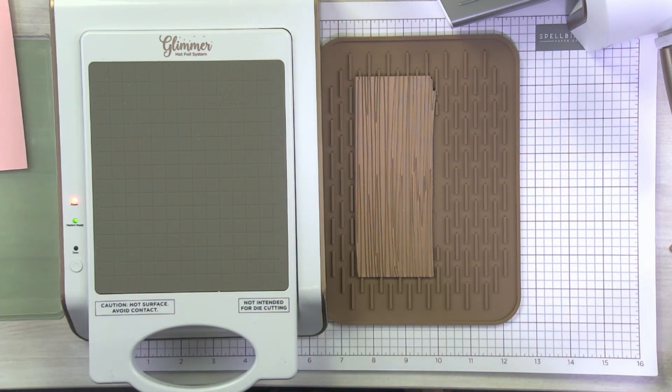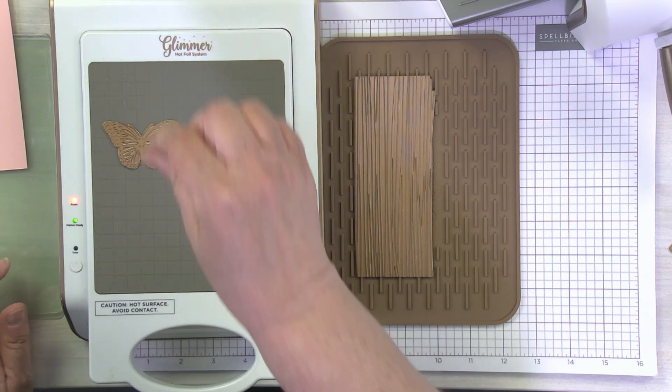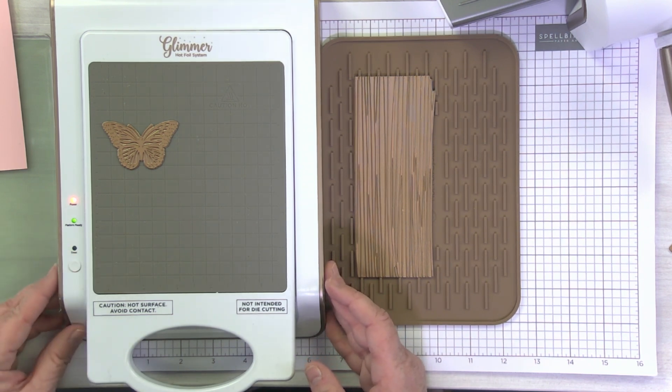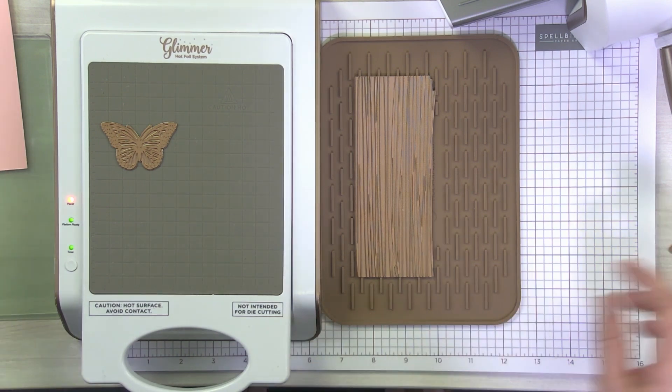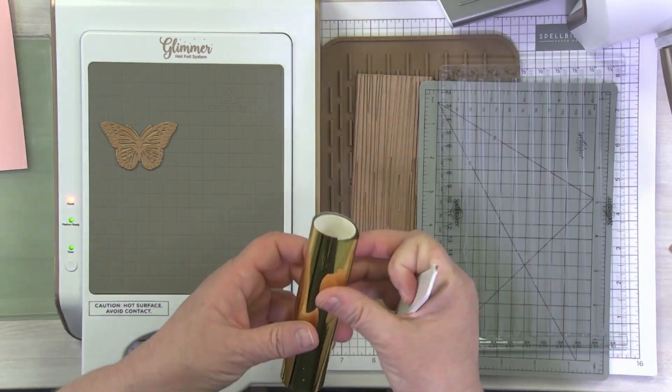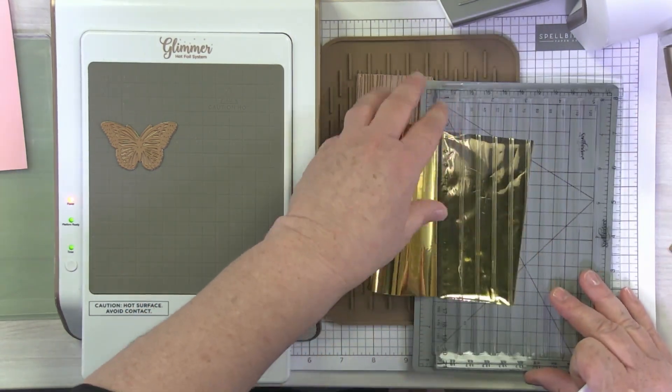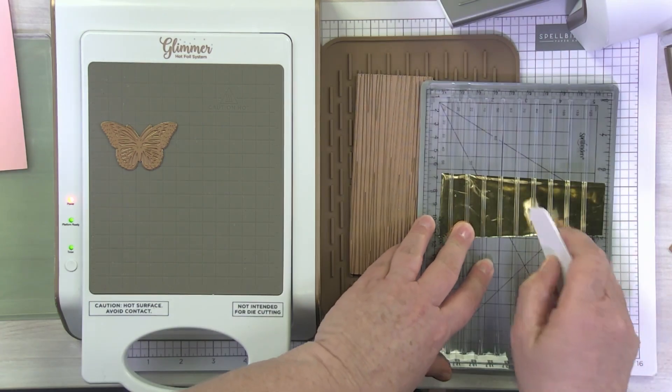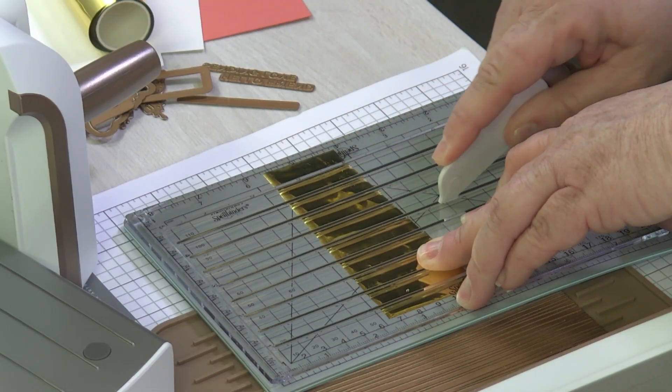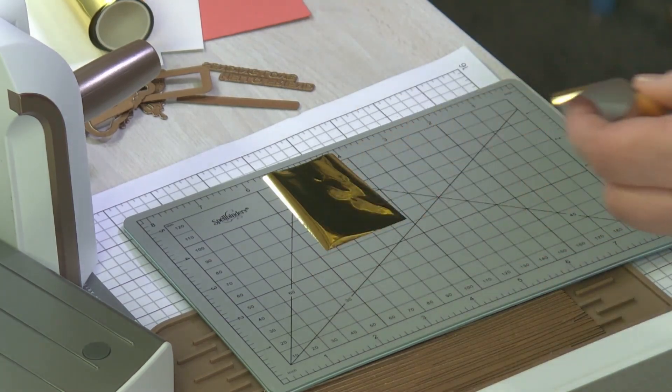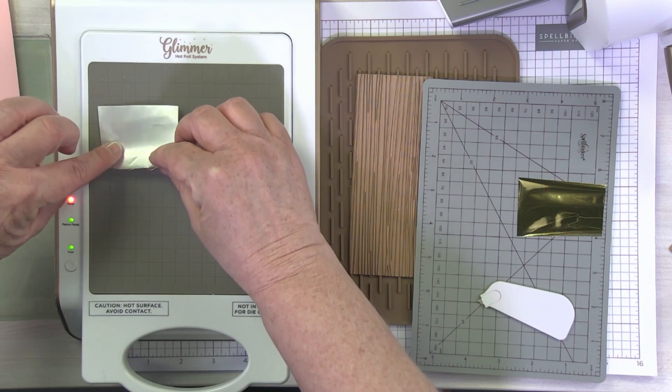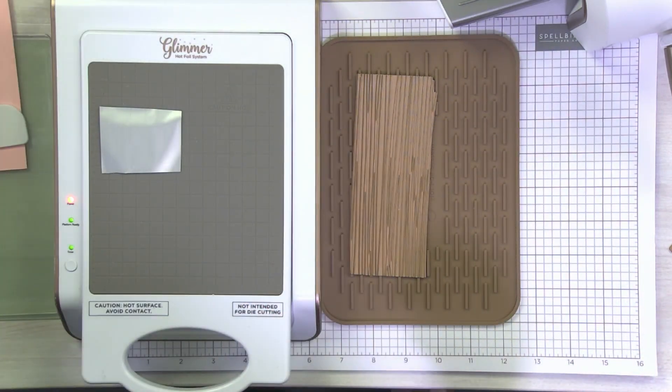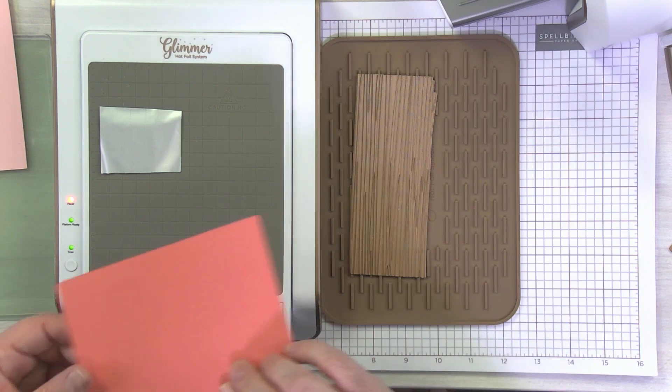Now while this is still heating up, I'm going to go ahead and grab my butterfly. This is one of my glimmering butterflies. I'm just going to place it on top. I do notice that my platform is ready, so I'll push the timer button. That means it's going to start heating up my butterfly plate. I'm going to quickly cut another piece of gold foil. I'm going to save that skinnier scrap for my sentiment.